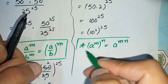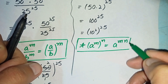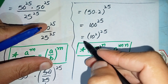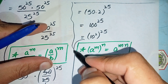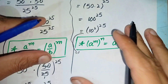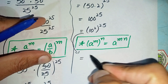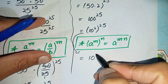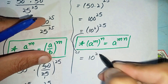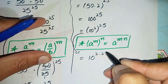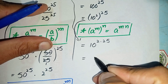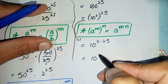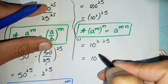By using this exponential formula, we write the base as 10 and multiply the powers: 2 times 25 equals 50, giving us 10 raised to the power 50.